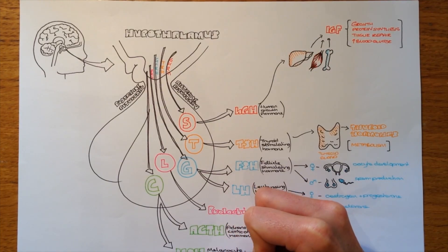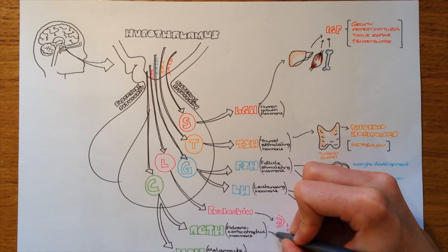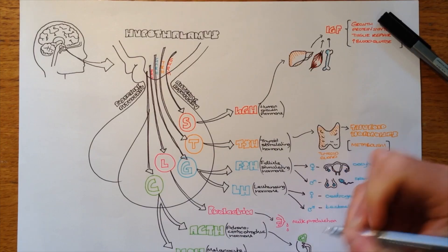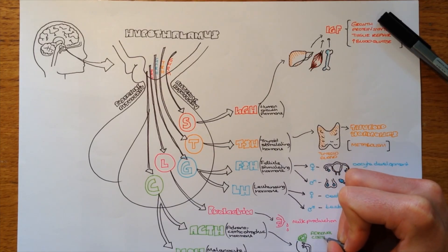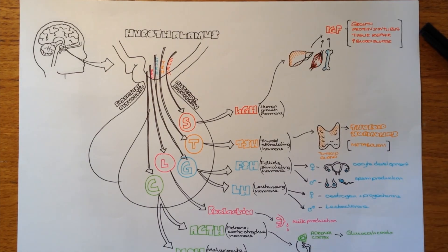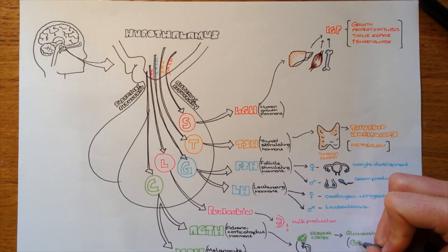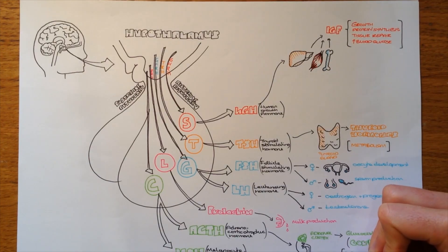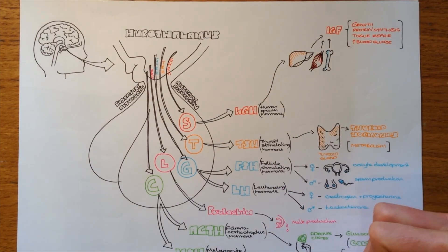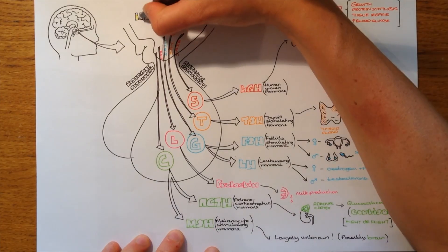ACTH travels in the blood to the adrenal cortex and triggers the production of glucocorticoids. In particular, cortisol, which is the steroid involved in the stress response, fight or flight. Not much is actually known about MSH, other than the fact that high levels are related to a darker skin tone. Think of melanin. And it's been thought to be involved in brain activity. But again, not much is known about it and it's not that clinically relevant, at least at this level.